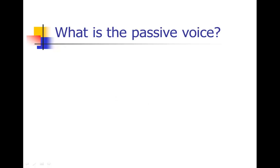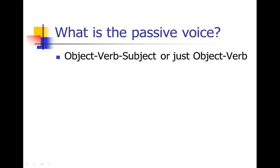Contrast that to the passive voice. The passive voice inverts that structure — it goes object, verb, subject, or sometimes just object, verb, where the subject is completely removed from the sentence. You would say instead of "she throws the ball," you would say "the ball was thrown by her." You can see that's a really awkward way to talk. We never talk in the passive voice, but yet when we sit down to do academic or scientific writing, a lot of us start to write in the passive voice — and it's also very awkward in writing.